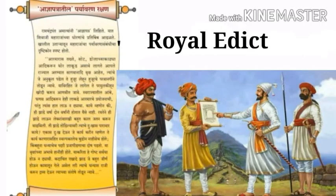Here is something for you to do. Copy the royal edict for the section on environment given in your textbook. Write it in big and beautiful letters, make a chart, and read it aloud in the classroom.